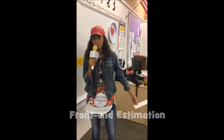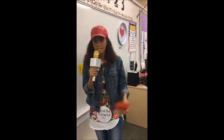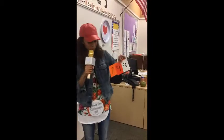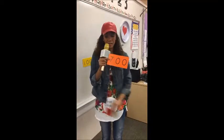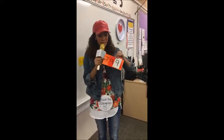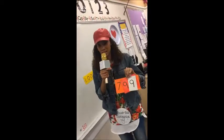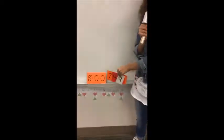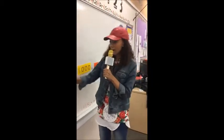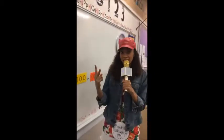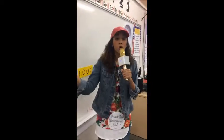But guess what? Front end estimation isn't always the most reasonable method to use. If I have 799, if I use front end estimation, my new estimated value is gonna be 700. But if I round to the nearest hundreds place, it's gonna be 800. Now 799 is closer to 800 than it is to 700. So in this case, rounding would be more reasonable. We use front end estimation to check to see if our answers — our sums, our differences, our quotients, and our products — are reasonable.